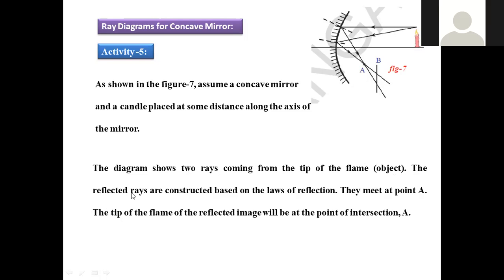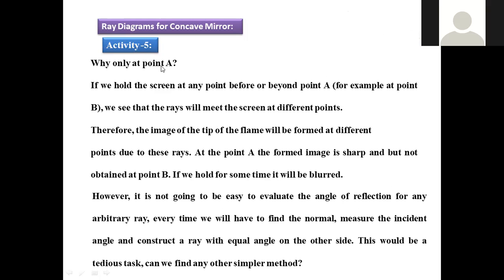The diagram shows two rays coming from the tip of the flame. The reflected rays are constructed based on the laws of reflection — the angle of incidence equals the angle of reflection. Both rays meet at point A, which is the intersection point. The tip of the reflected image is located at this point of intersection A.